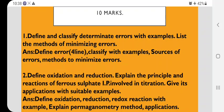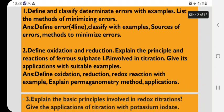Next, define oxidation and reduction. Explain the principle and reactions of ferrous sulfate involved in titration. Give its application with suitable example. Here you have to define the oxidation first, reduction, then redox reaction with example. Then you have to explain permanganometry method application. First you write some of the redox types of the reaction: bromatometry, permanganometry, cerimetry, this you mentioned. After that you write the permanganometry.